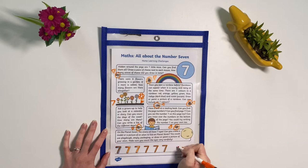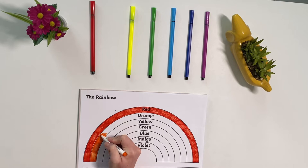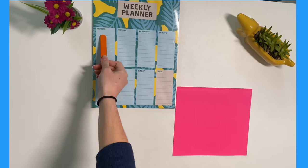In this activity, children can learn about the seven colours of the rainbow by colouring them in. Can they name all of the seven colours?